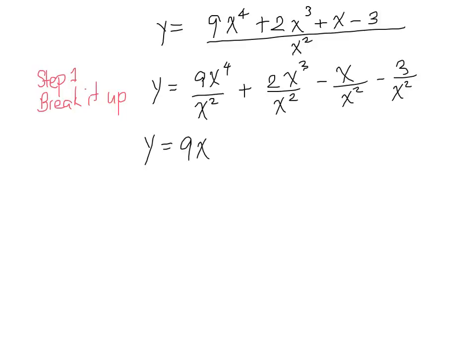So we have 9x. When we subtract our 4 minus 2, we get 2. So we're simplifying by subtracting our exponents. 2x to the 1, which we don't have to write the 1, it's assumed. Minus, we have a 1 here that we didn't have written. So 1 minus 2, we have x to the minus 1. We can bring that up, and we get 3x to the negative 2, because the sign changes when you move something from the denominator up to the numerator. So now we are ready to differentiate this.